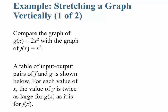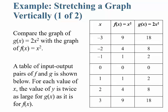What we can do is find a table of input-output pairs for the two functions f and g. For each value of x, the value of y is twice as large for g of x, because you're multiplying it by 2, as it is for f of x.